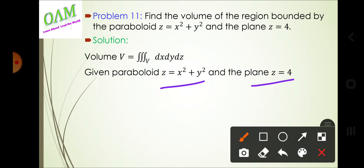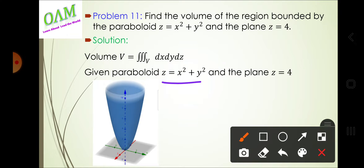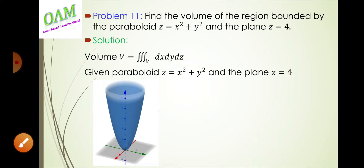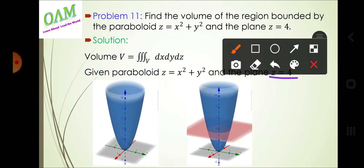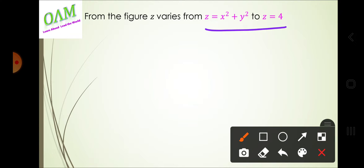Solution: Volume V is equal to the triple integral over region B of dx dy dz. Given the paraboloid z = x² + y² and the plane z = 4, z varies from z = x² + y² to z = 4.